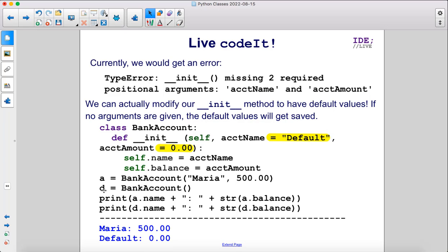So here, for object D, we don't include any arguments. If we were to print out d.name, we would get default and d.balance would return 0.00.